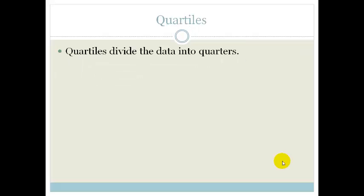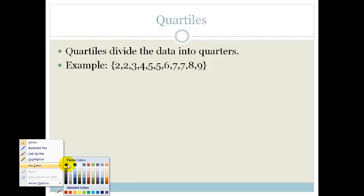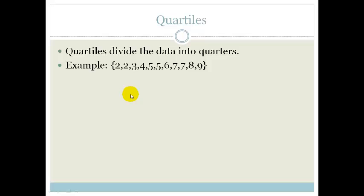So quartiles divide the data into quarters. Let's take an example. You'll notice that we've taken this data and we've already arranged it in numerical order. Because no matter what your data is, you always have to rearrange it in numerical order. So we've got 2, 2, 3, 4, 5, 5, 6, 7, 7, 8, 9. And you'll notice that our range is 2 to 9.